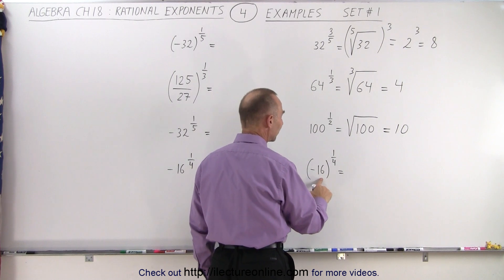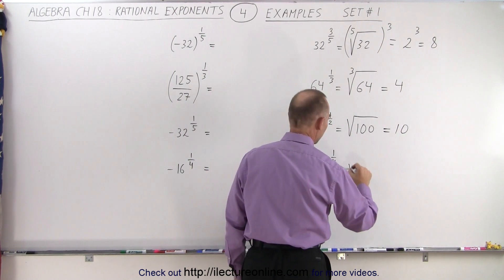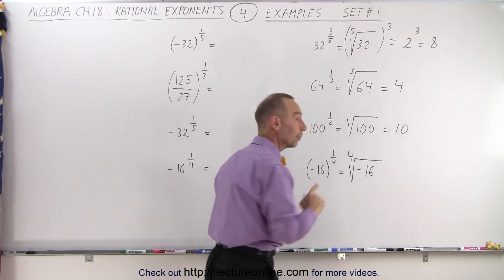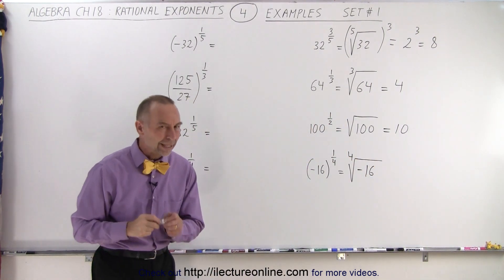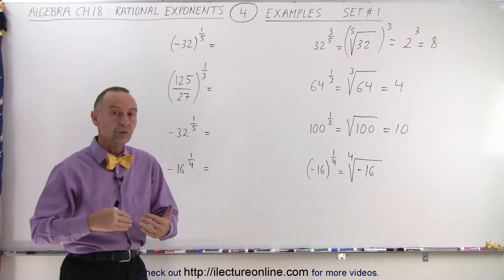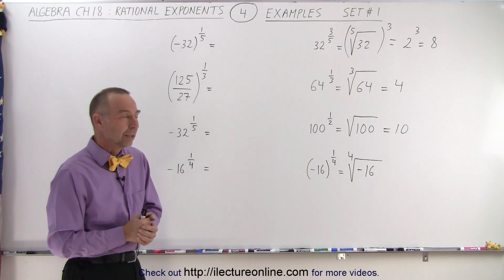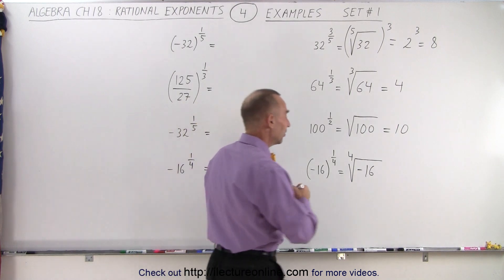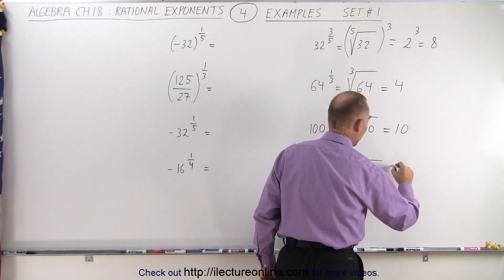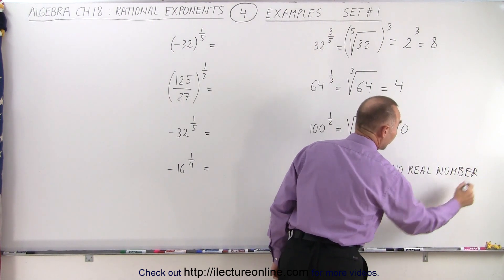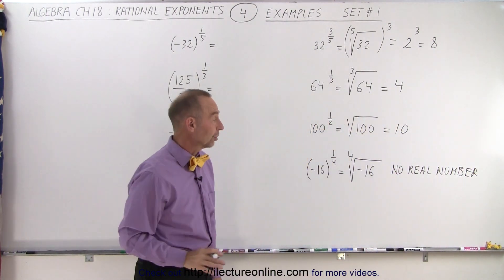And here, negative 16 to the one-fourth power, that means the fourth root of negative 16. Now here we have a problem, because we cannot take an even root, a square root, a fourth root, a sixth root, of a negative number. So what we could do here is say, well, there's no solution or no real number. However, we've already seen the imaginary number before.